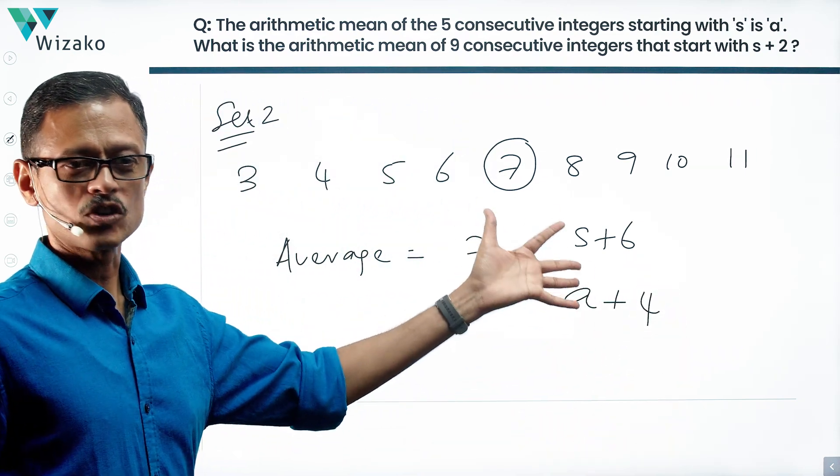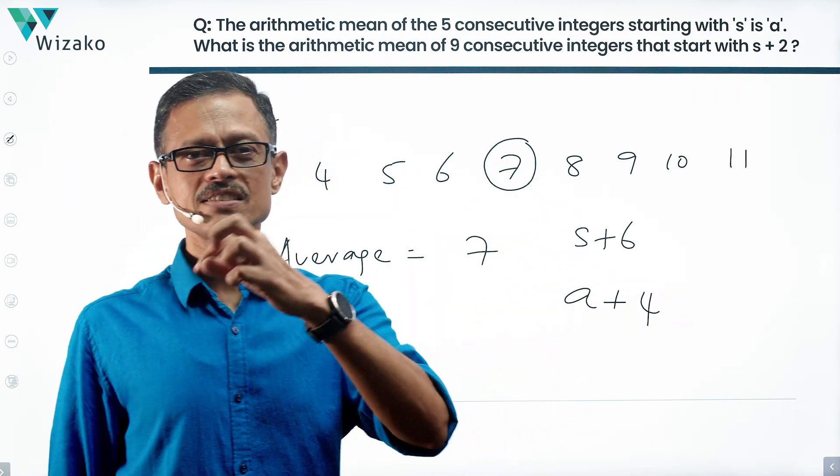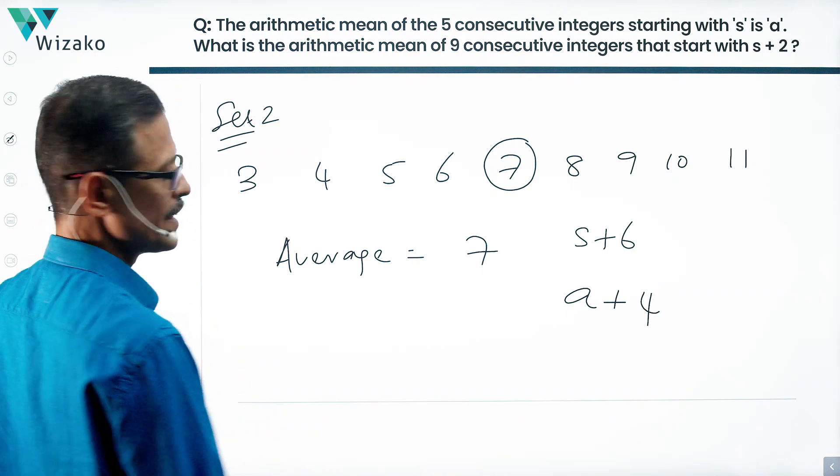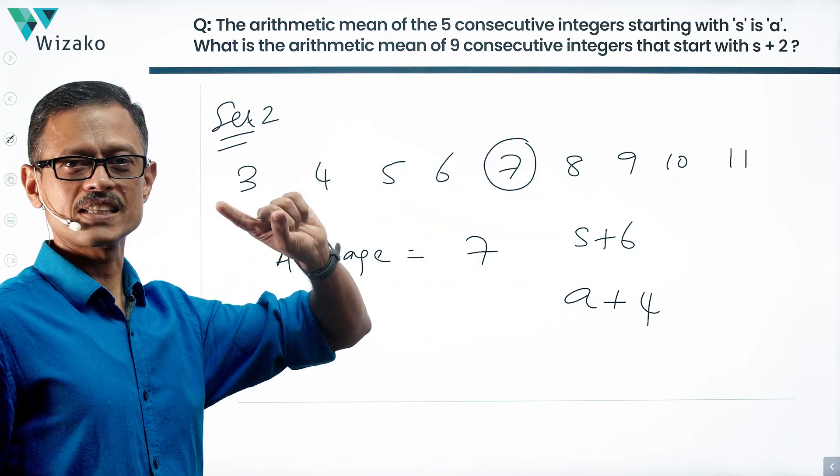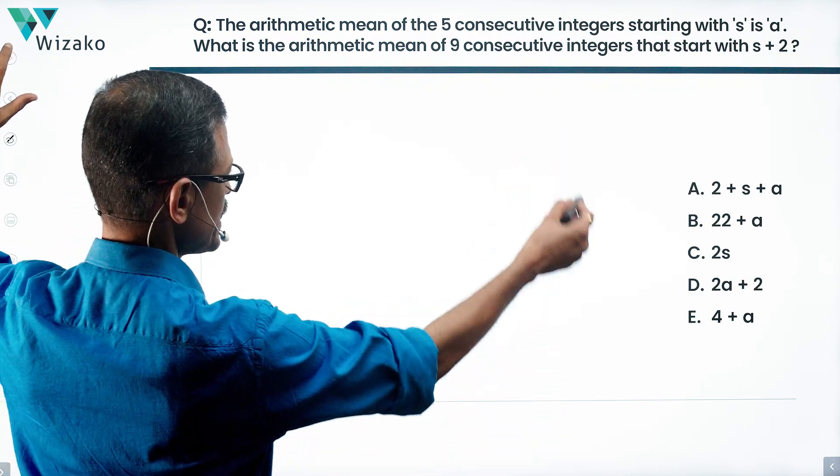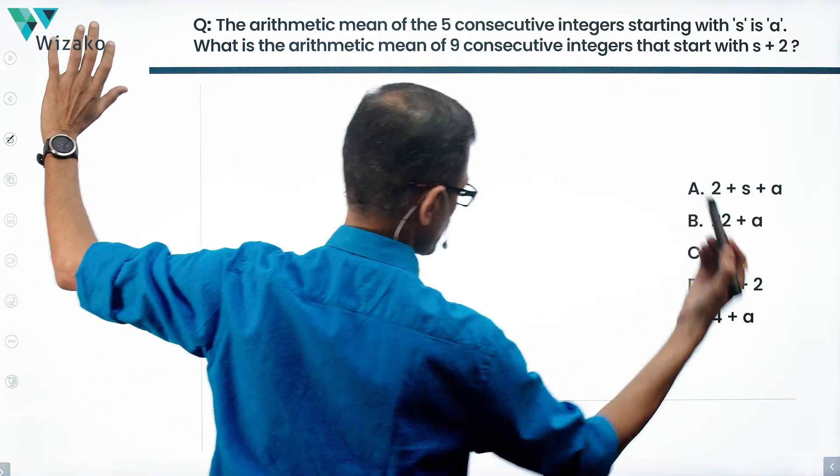Let's check if anything in the answer options matches one of these. Otherwise, we'll plug in S equals 1 and A equals 3 to check which gives us an answer equal to 7. The answer options are: I have 4 plus A, A plus 4.